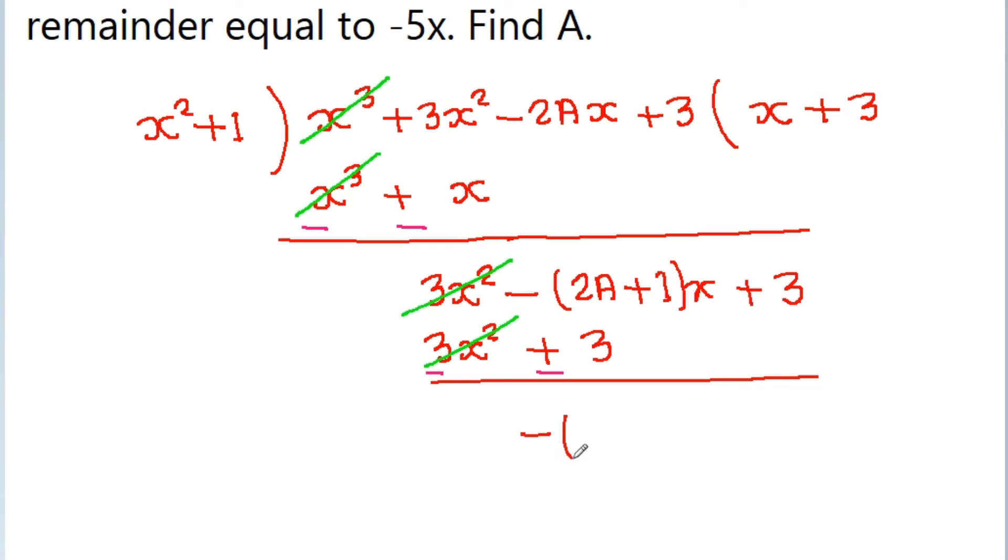And here we get minus 2A plus 1 times x, and also this 3, and this minus 3 will be cancelled.